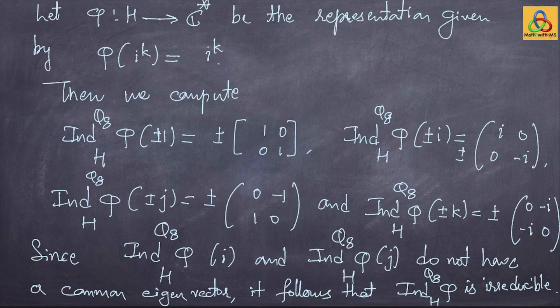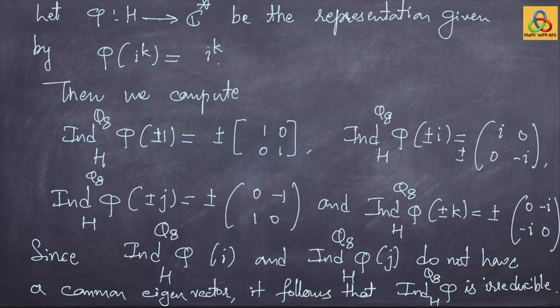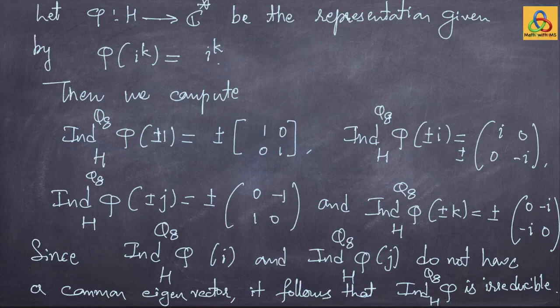Here is the natural question: if you have a subgroup H of a group G and an irreducible representation of the subgroup, what are the conditions under which the induced representation of an irreducible representation is irreducible? As we saw, the induced representation of an irreducible representation need not be irreducible — for example, the trivial representation of the trivial subgroup induced to the regular representation, which is not irreducible. There are conditions due to Mackey under which induction of an irreducible representation is irreducible, and we will find such a criterion in the next lecture. I will stop here. Thank you.